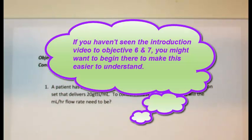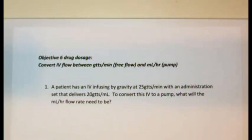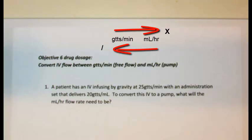While working with objective 6 drug dosage problems, these problems introduce a step of converting IV flow rates between free-flowing an IV by gravity or infusing an IV by IV controller or pump. Because they involve two different flow methods and two different flow times, there is an easy way to use these conversions.